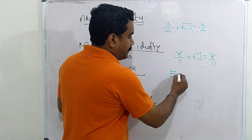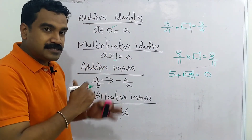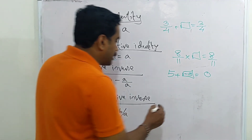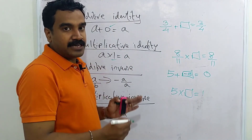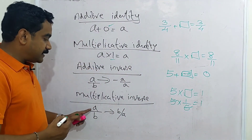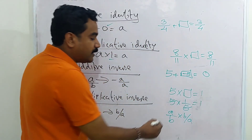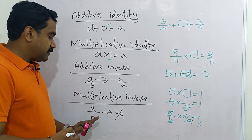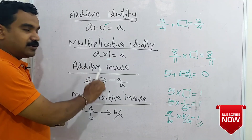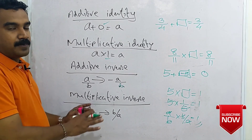Now the inverse properties. Additive inverse: 5 plus dash equals 0 — the answer is negative 5. So the additive inverse of A by B is minus A by B. Multiplicative inverse: 5 into dash equals 1 — 5 into 1 by 5 equals 1, so the multiplicative inverse of A by B is B by A, the reciprocal. To find it, just swap the numerator and denominator. So: additive identity is 0, multiplicative identity is 1, additive inverse is obtained by changing the sign, and multiplicative inverse is the reciprocal.